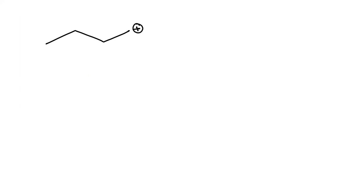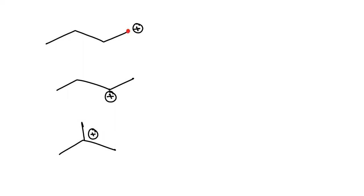We need to talk about the stability — which one will be the most stable. If we choose a random compound and the positive charge is here, the position of carbocation is on the carbon with the positive charge, and that carbon is attached to only one alkyl group. So we call it primary carbon.